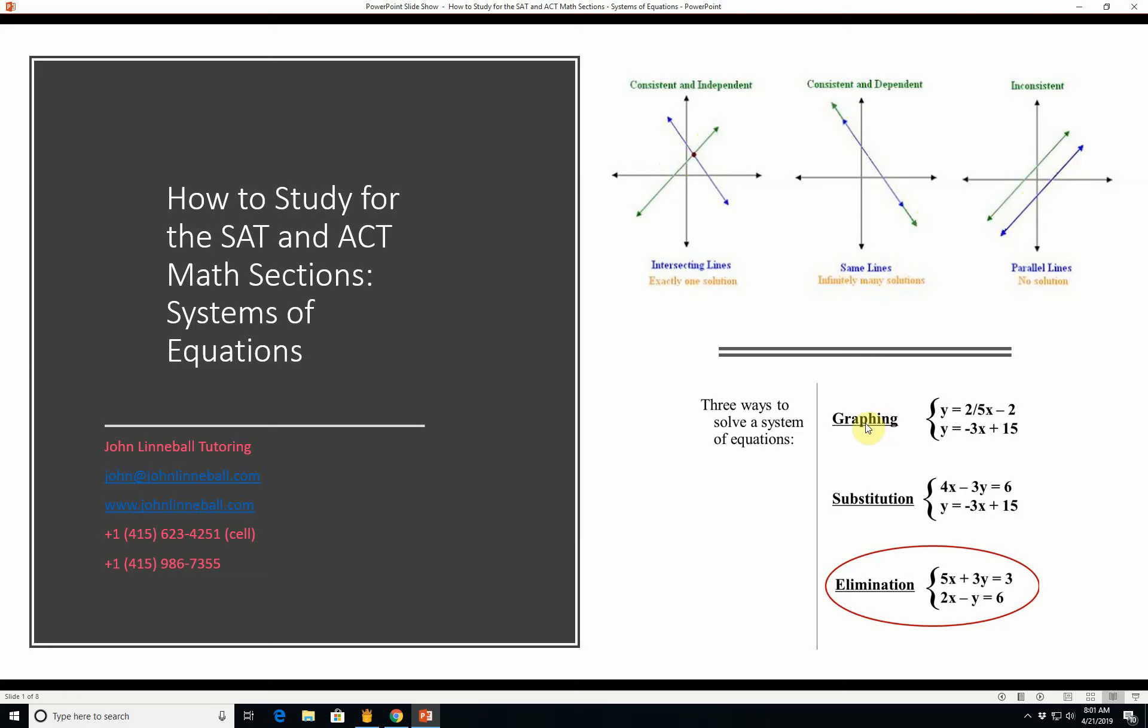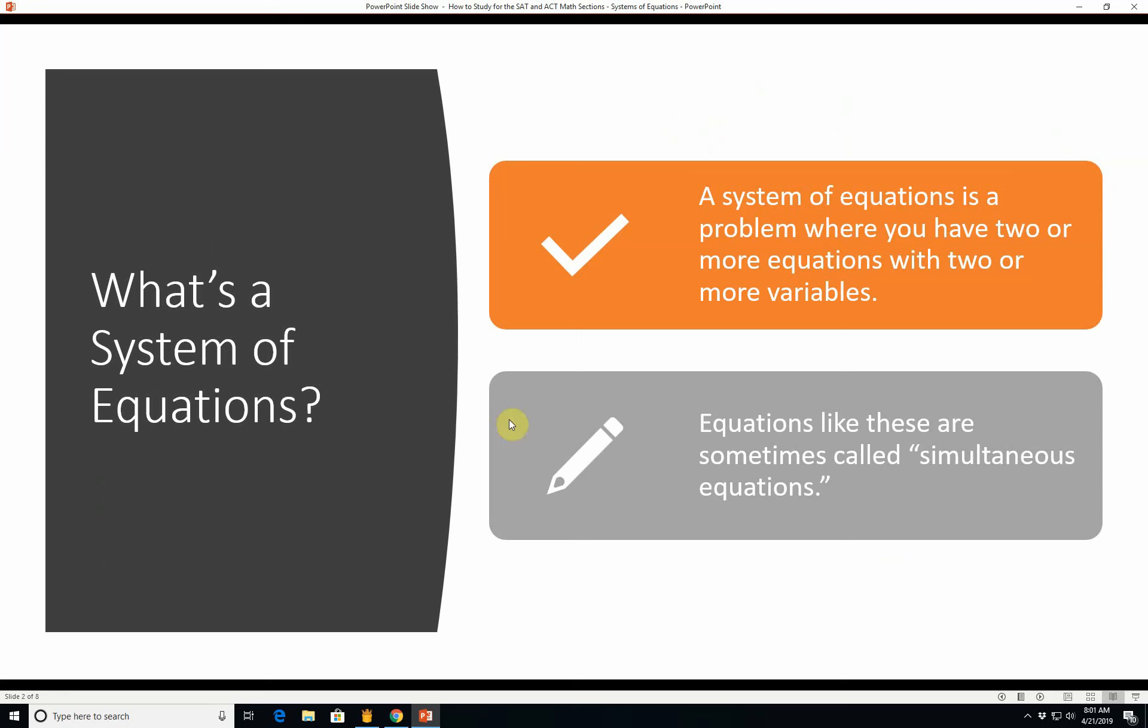So there are three ways to solve a system of equations: graphing, substitution where you solve for one variable then substitute that variable into another, or elimination where you line these up and add downwards. We'll go over that some more.